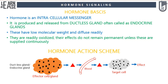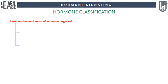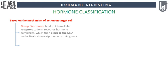For further details on the basics of hormone signaling, check out the introductory video linked in the description below. Based on the mechanism of hormone action on the target cell, hormones are classified as Group 1 and Group 2. Group 1 hormones bind to intracellular receptors to form hormone-receptor complexes, which then bind to DNA and activate transcription of certain genes.